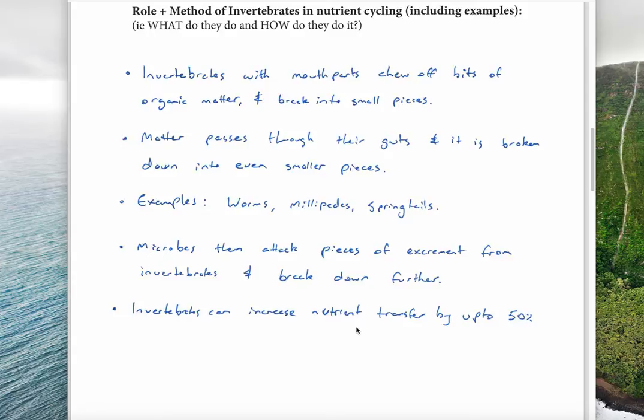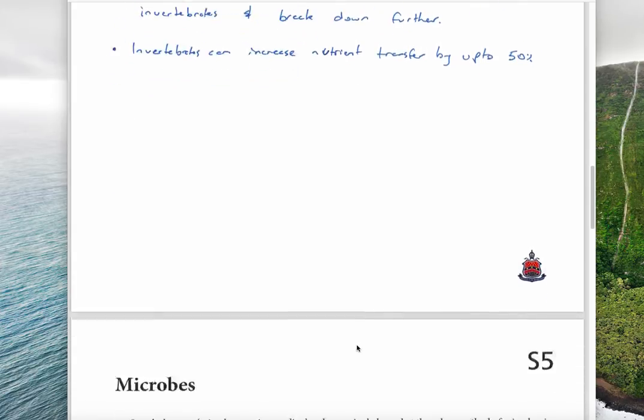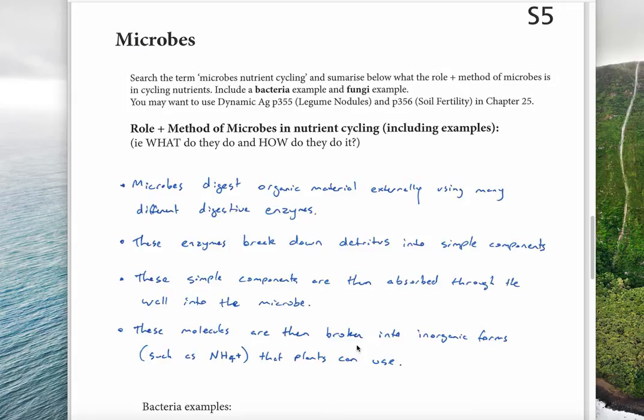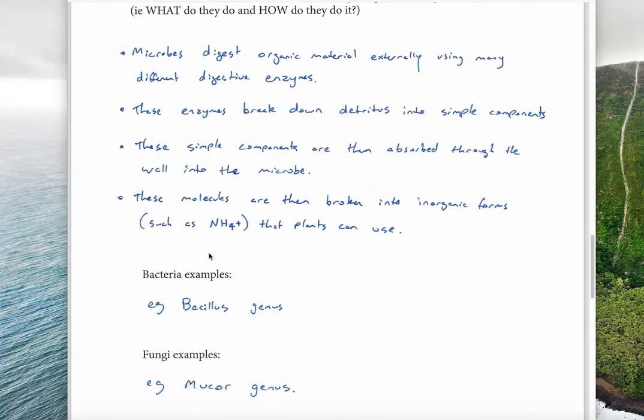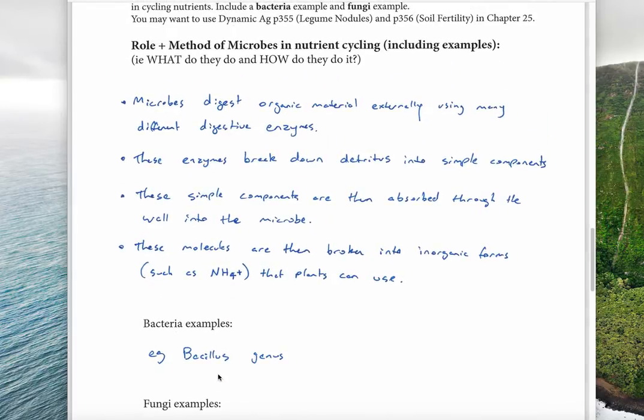For microbes, if you search the term microbes nutrient cycling or microbes decomposition, you'll find information. What I want here is what microbes do and some examples. Microbes are small living bacteria or fungi that we can't see because they're microscopic, which is why they're called microbes, and they digest organic material externally.